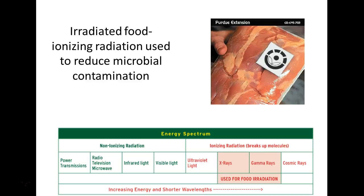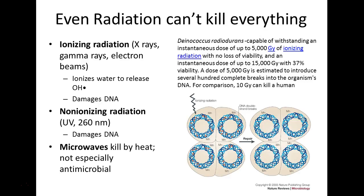Irradiation can also be used to kill microbes. Many people worry about irradiation because you're bombarding your food with radiation, and they worry it becomes radioactive. It doesn't — any more than you become radioactive when you get out of a tanning booth. However, radiation doesn't kill everything. Here is Deinococcus radiodurans, an extremely tough microbe — it hardly matters how much radiation you give it. It's a pretty tough customer.